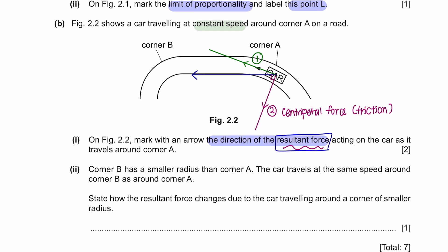Part 2. Corner B has a smaller radius than corner A. The car travels at the same speed around corner B as corner A. State how the resultant force changes due to the car traveling around a corner of a smaller radius. The resultant force depends on two factors: the speed of the object moving or the radius towards the center. The force can be increased by increasing the speed of the object or decreasing the radius. So with a smaller radius, the force increases.